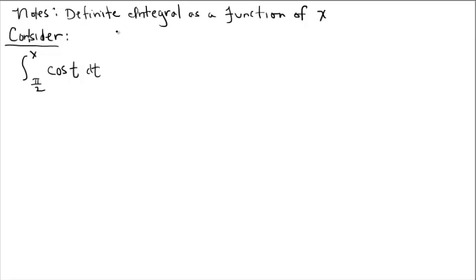We're going to look at a definite integral as a function of x. One obvious change you'll see is that I've replaced one of the limits with a variable. If I replace the limit with the variable x, it's common practice to go back into the integrand and the differential and change from x to a different letter — any other letter besides x. I've just chosen t. So if you have a variable limit, you don't use the same variable in the integrand and the differential.